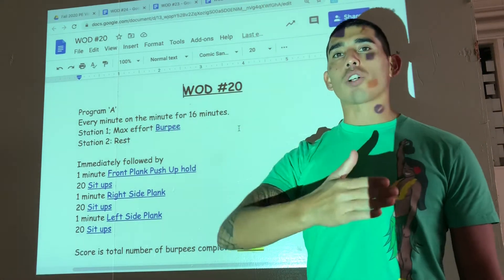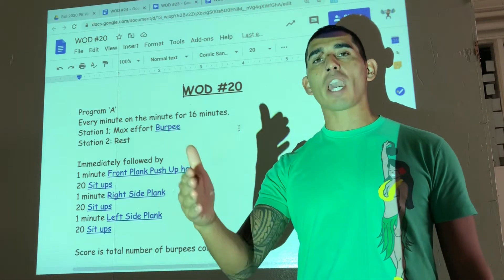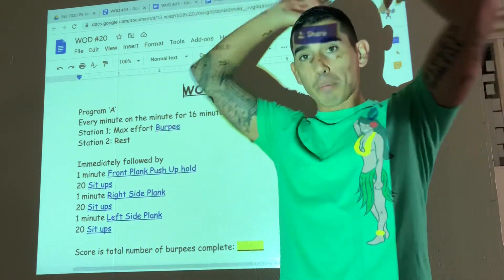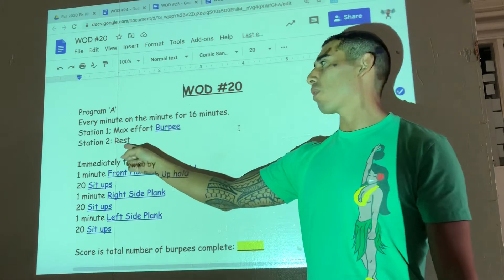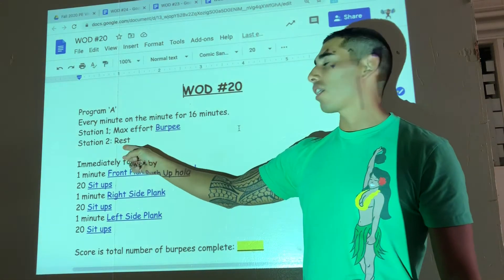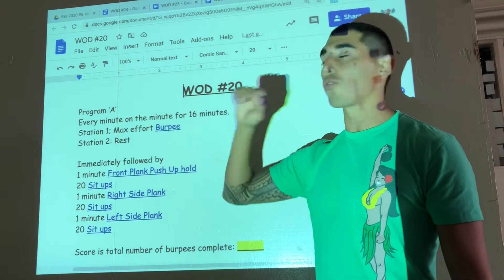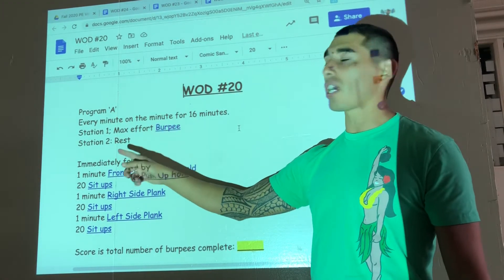On three, two, one, go - you start your burpees. For one minute, you're doing as many burpees as you can. Make sure chest and thighs are touching the ground, jump up, clap overhead. On the next minute, you get to rest for an entire minute. Third minute burpees, fourth minute rest, and so on for 16 minutes. You're working for eight minutes, resting for eight.